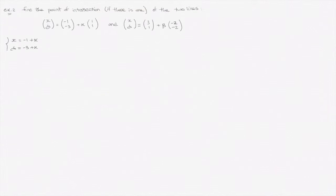The second line would have parametric equations x = 3 - 2β and y = 1 - 2β.